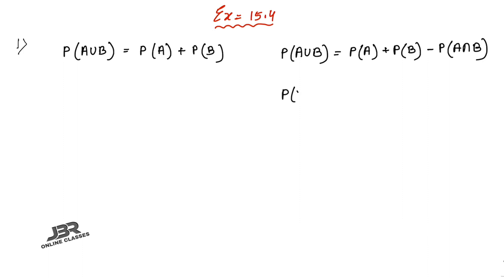That means P(A∩B) equals zero. So A and B are mutually exclusive. If A∩B equals zero, your answer is: A and B are mutually exclusive.